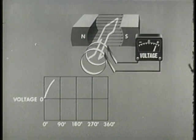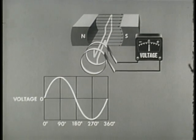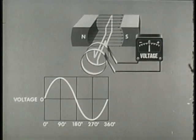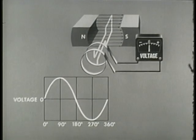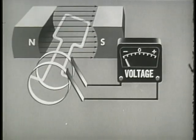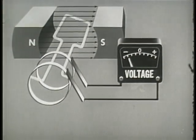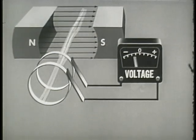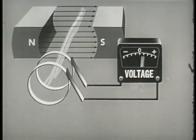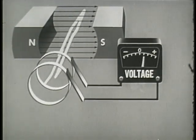All generators produce AC internally. In this basic AC generator, the arms of the loop cut lines of force in opposite directions, causing electromotive force of opposite polarity to be generated in the conductor. To maintain the AC character of the output in this generator, we use slip rings instead of the commutator segments used in the DC generator. This use of slip rings is the only structural difference between AC and DC generators.